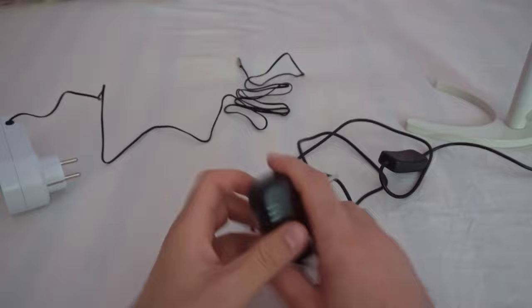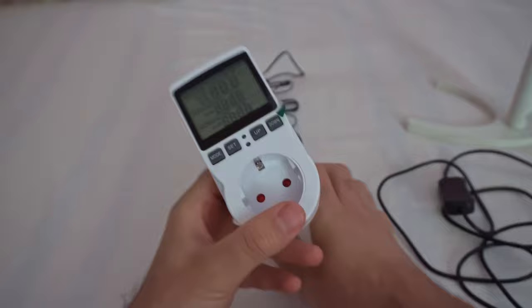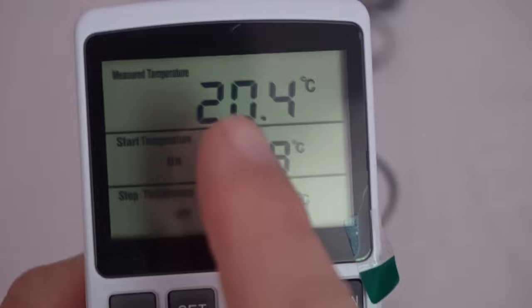Now power the thermostat itself, the digital thermostat. It looks like this. It says measured temperature 20 degrees Celsius, 20.4. That is of this sensor. So if I put my hand on it then this number will get higher.